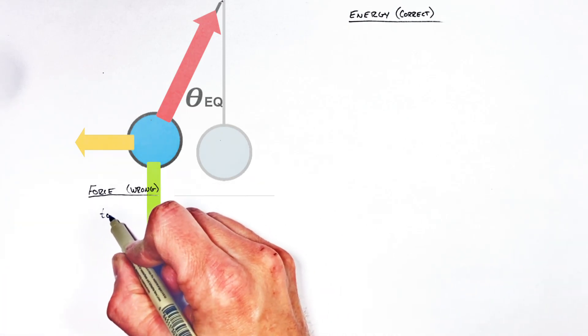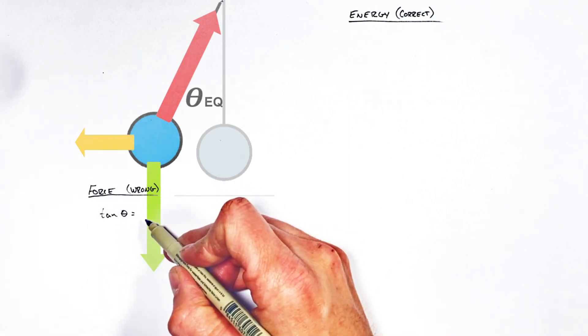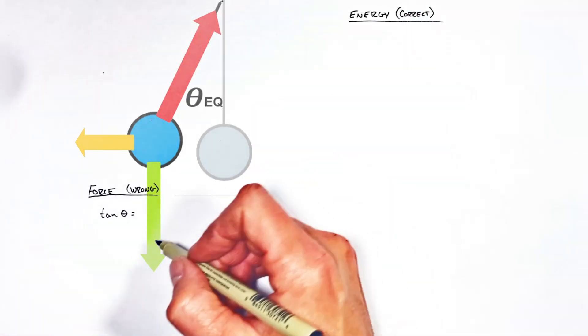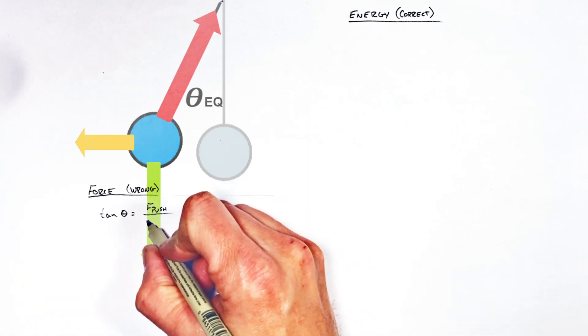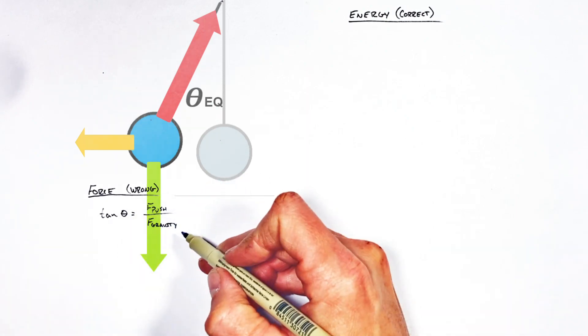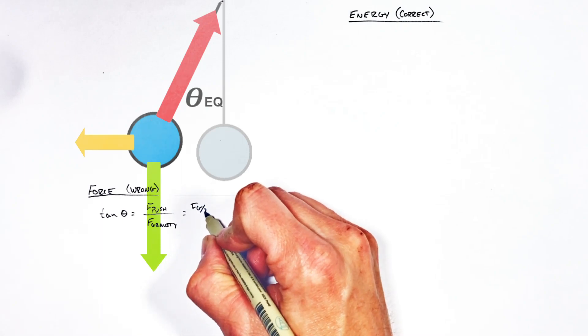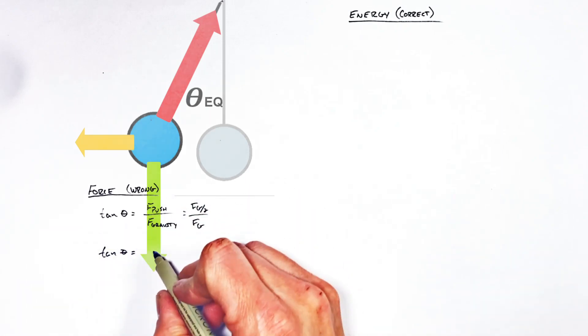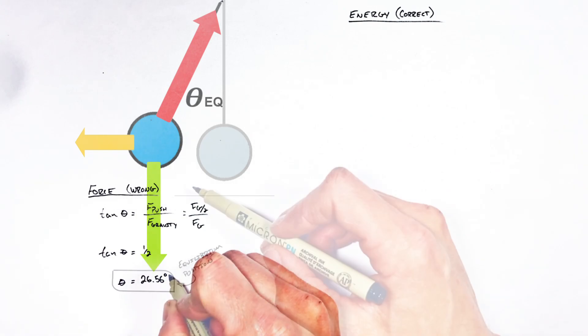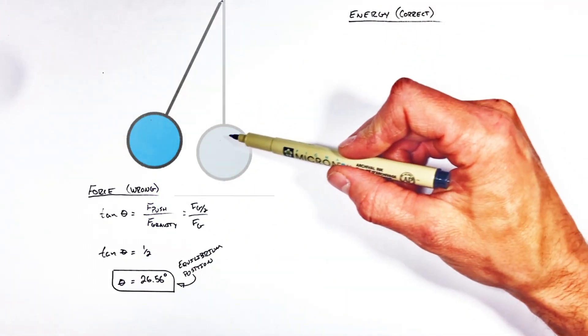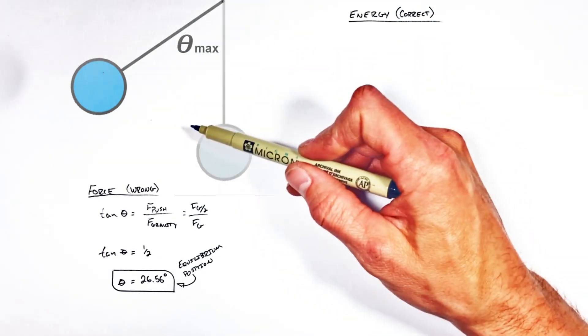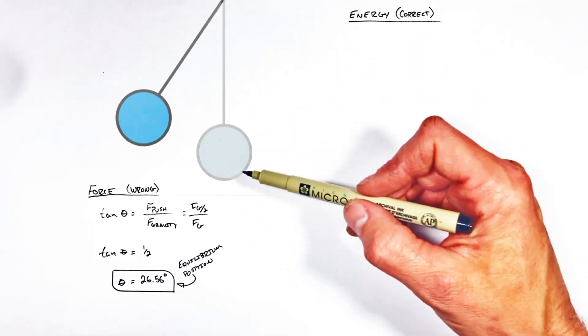Setting the tangent of theta, where theta is the angle between vertical and our pendulum, we can say that's equal to our push force divided by the force of gravity. Recognizing that the push force is half the force of gravity, we find the position of equilibrium is 26 and a half degrees from vertical. But using this method doesn't actually answer this question of the maximum displacement that this pendulum is going to reach.